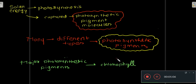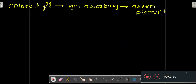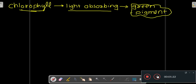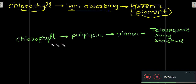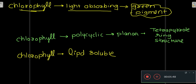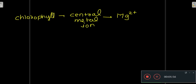Chlorophyll is your major photosynthetic pigment — it is a light-absorbing green pigment. Chlorophyll contains a polycyclic planar tetrapyrrole ring structure. It is also lipid soluble. In chlorophyll, there is a central metal ion, and this central metal ion is Mg²⁺.